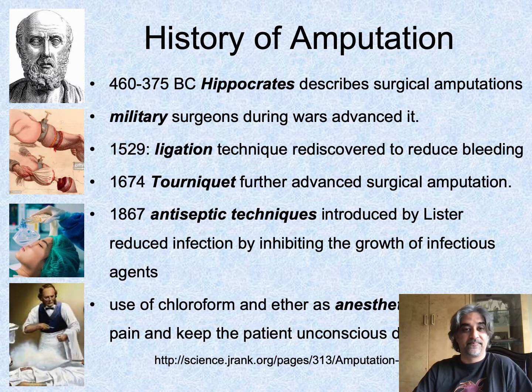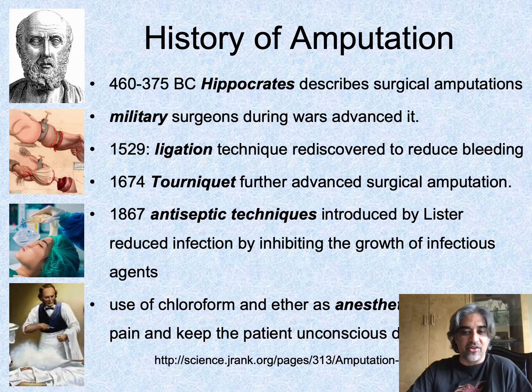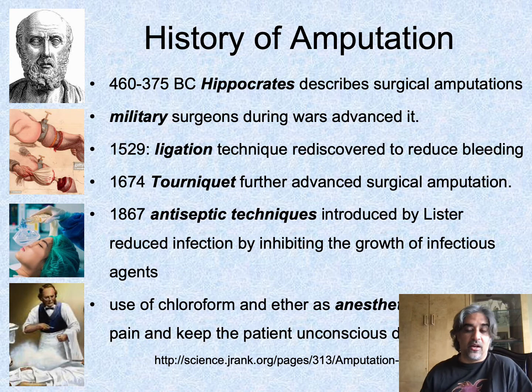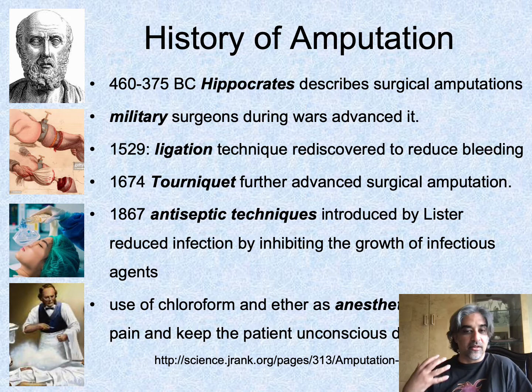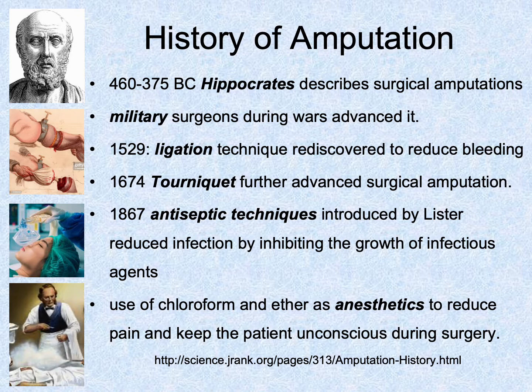It's important to go through the history of medicine as it relates to amputation, because basically people weren't surviving their amputations. Hippocrates describes surgical amputations as far back as 460 BC. As military surgeons had to use it, ligation technique, tourniquet, antiseptic techniques, the ability to stop infections and anesthetics — all of these made the process of amputating someone and letting them survive it more reasonable.